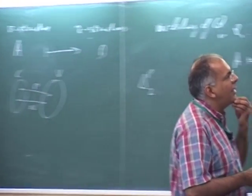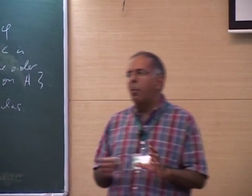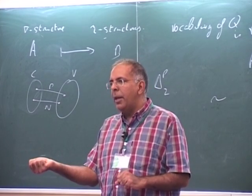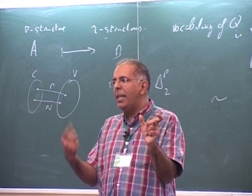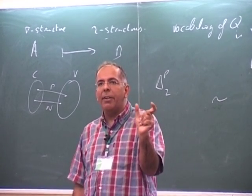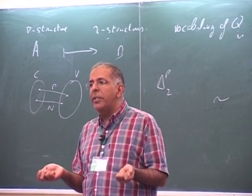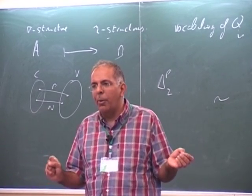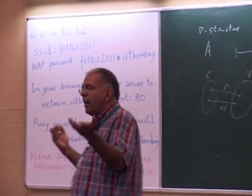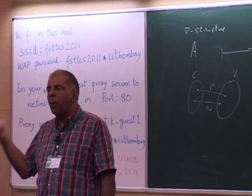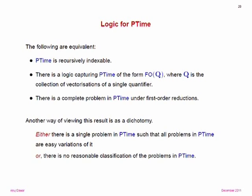The open question 'is there a logic for P' has several equivalent formulations: P time is recursively indexable; there exists a logic capturing P via an extension of first-order logic with quantifiers that are vectorizations of one complete problem; and there exists a complete problem in P under first-order reductions. This is a sharp dichotomy: either there is a very neat classification with one complete problem and everything being a first-order variation of it, or there is really no reasonable classification of polynomial-time properties at all — not even recursively.